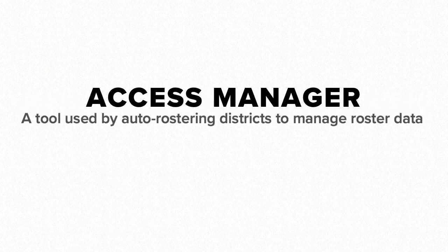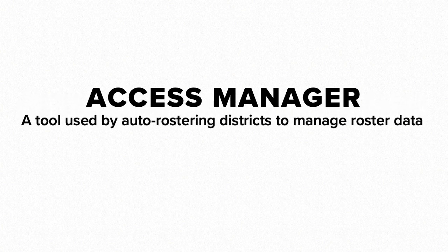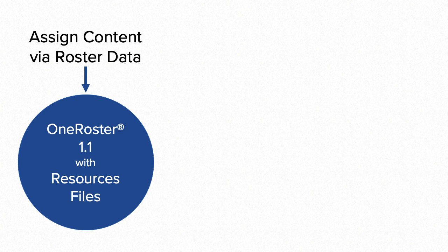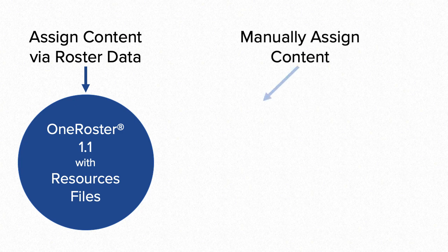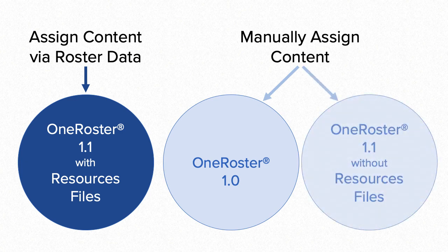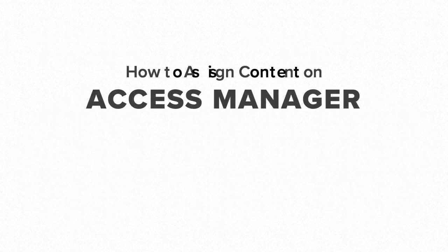Access Manager is a tool used by auto-rostering districts to manage their roster data. Content assignments can be handled by the roster data when you use OneRoster 1.1 and include the resources files. Districts need to manually assign content on Access Manager if they use OneRoster 1.0, or if they use OneRoster 1.1 but don't send us the resources files. This video demonstrates how to assign content on Access Manager.